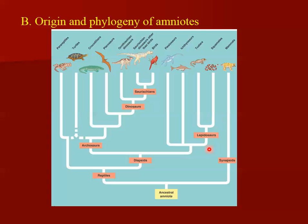Now we get into a little complicated part about the book. The traditional view is that there were two main lineages that descended from reptiles: the diapsids and the synapsids. One branch of reptiles evolved into modern reptiles, and the other branch, the synapsids, evolved into mammals.